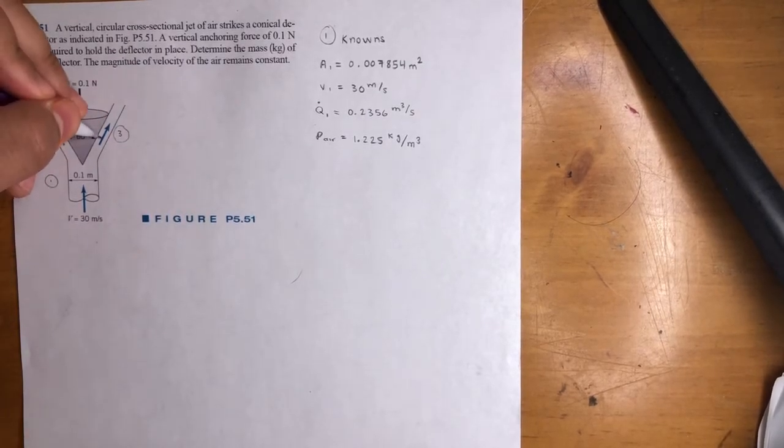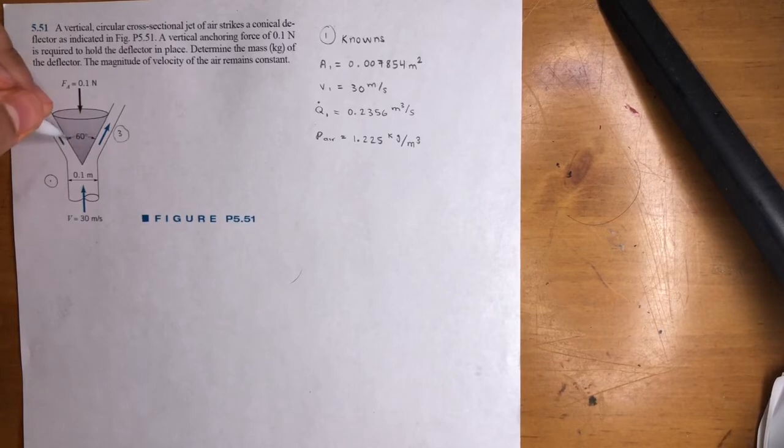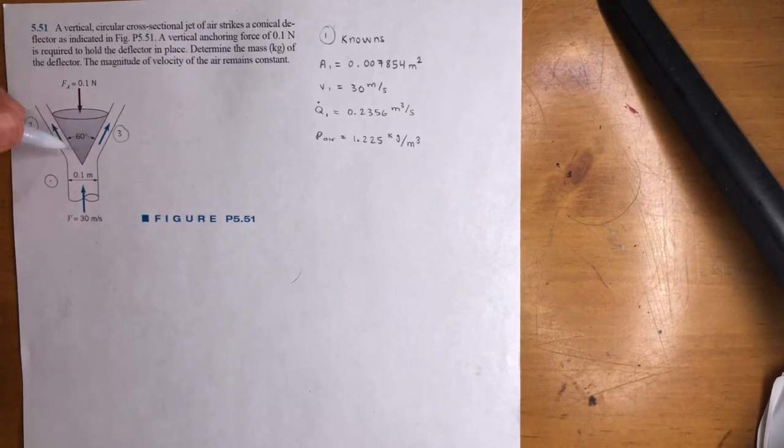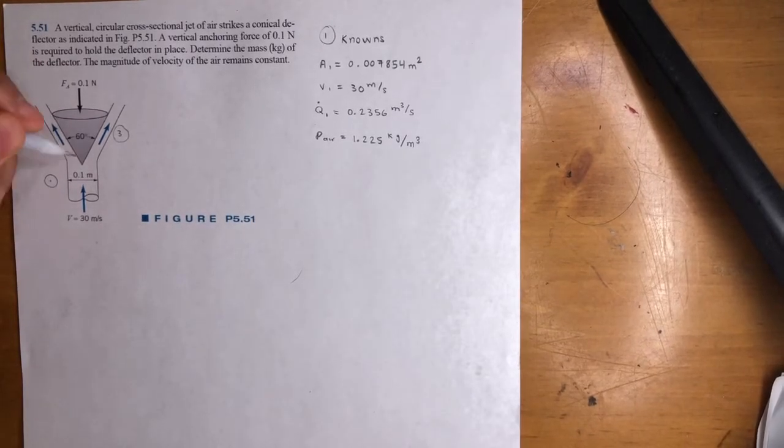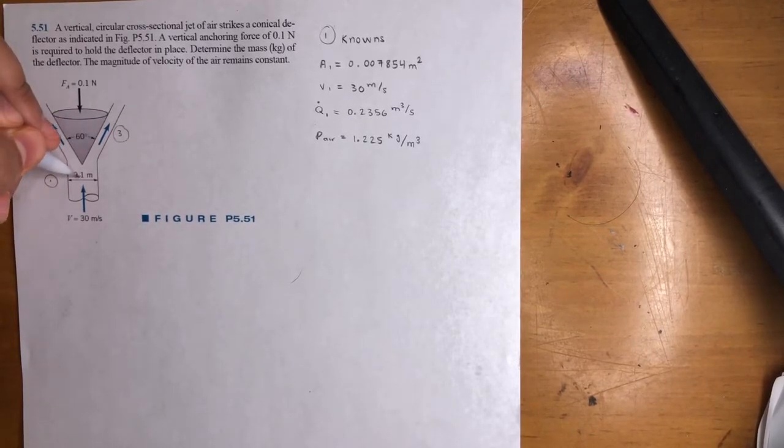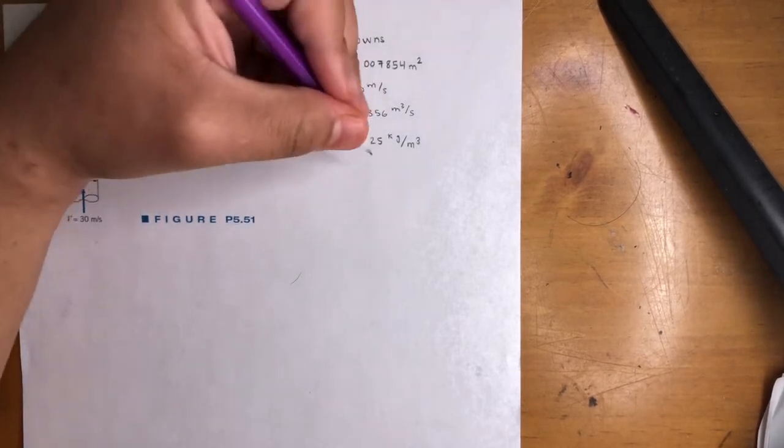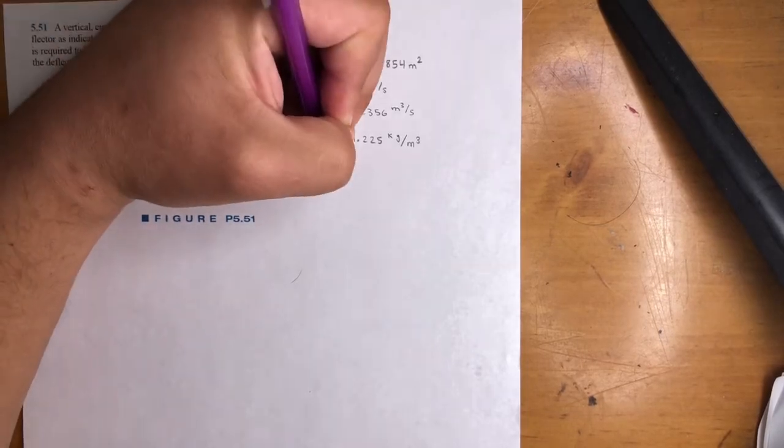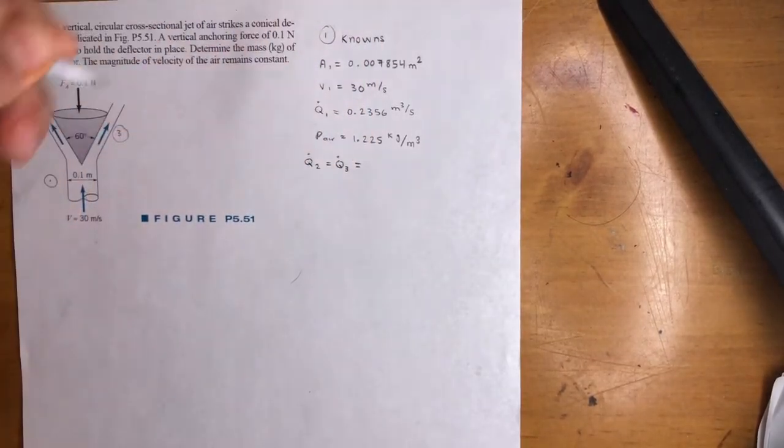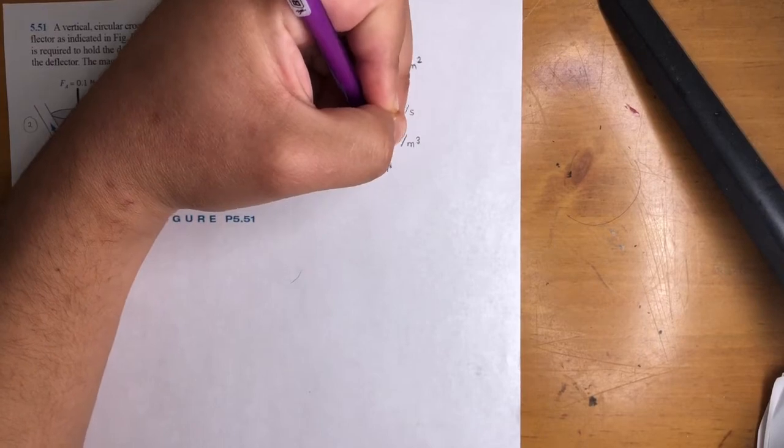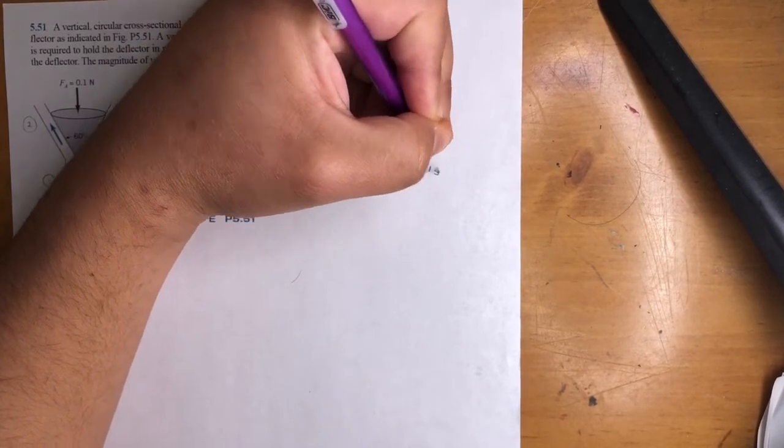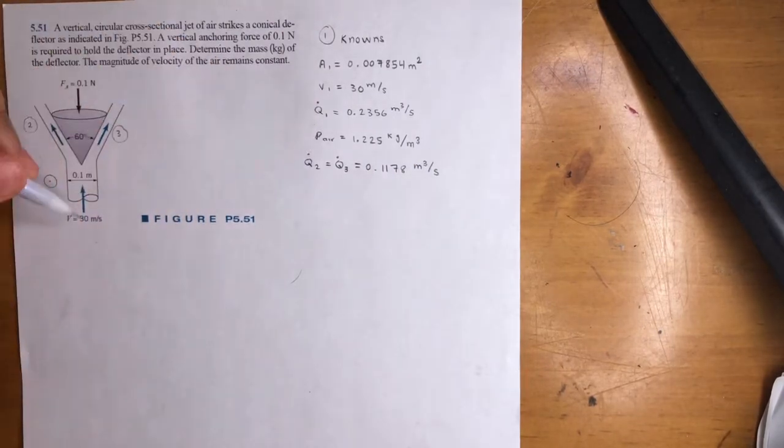We don't know the area here or the velocities at these two points. But because of continuity, we know whatever goes in is equal to whatever comes out. So this problem is perfectly symmetrical. It's hitting right on the dot. So half will go here, half will go here. That doesn't mean that velocity is 15 here and 15 here. And it doesn't mean that diameter is 0.05 here, 0.05 here. What it does mean is that Q2 equals Q3. Symmetrical. And that value is half of this. So the area is not half, the velocity is not half, but the flow rate is. Because whatever comes in equals whatever comes out.